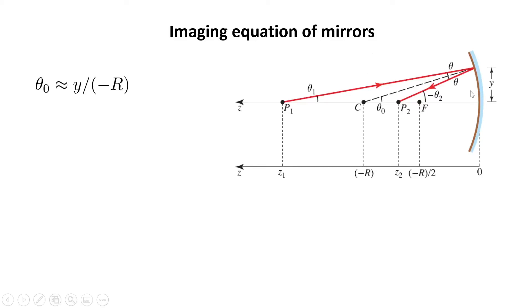Now, if the height of this reflection point is y, I can write theta 0 equal to tangent of theta, which is y over minus R. Remember that the radius is negative for concave mirrors.